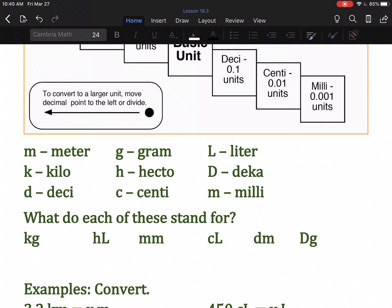KG is kilogram. HL is hectoliter. MM is millimeter. CL is centiliter. DM is decimeter. Capital DG is decagram.